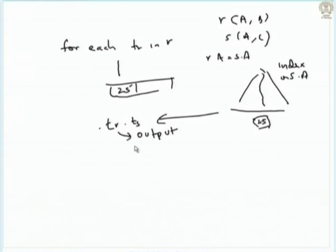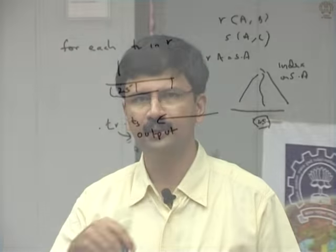I take the outer relation, search the index, find matching tuples, and output the pairs. That is the basic idea — index nested loops — and it is very widely used.